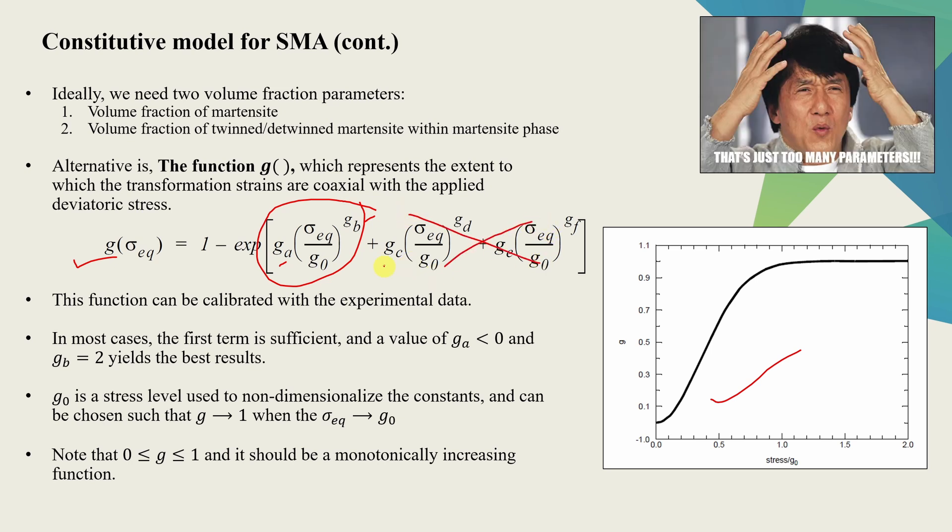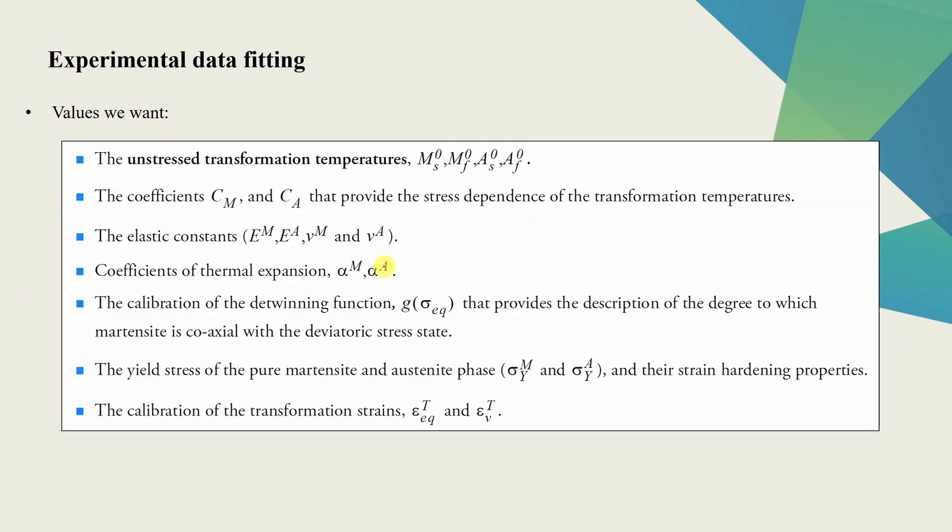I know what you're thinking. These are too many parameters. But that's all we have. So if we list down all the parameters needed to define SMA material in MARC, we will get this list. We need four unstressed transformation temperatures. Then we need two slope values for elastic part of the strain. We will need to define Young's modulus and Poisson's ratio, and we have to define that separately for martensite and austenite. Then thermal coefficient of expansions. Then we have to calibrate the G function. Of course, we have to define yield stress again separately for martensite and austenite and their hardening rules. And finally, transformation strain parameters.